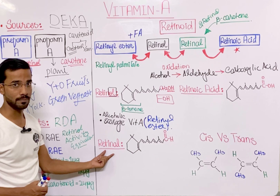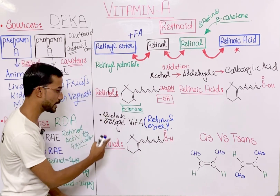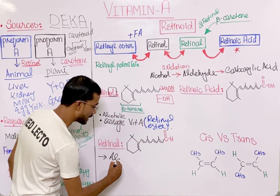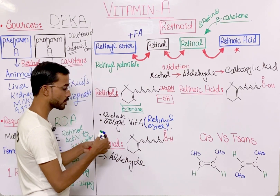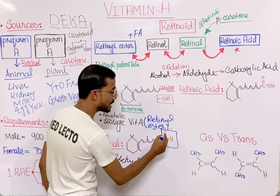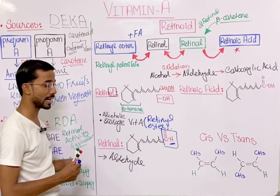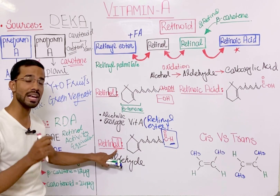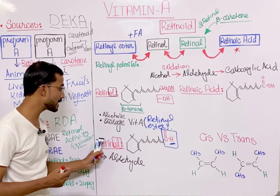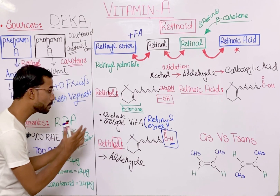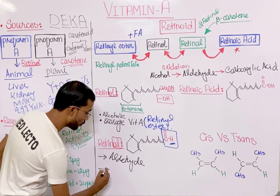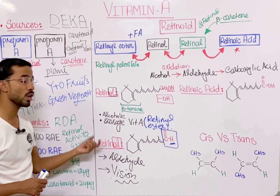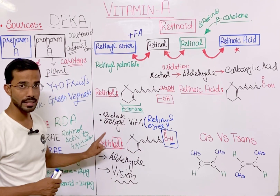When retinol undergoes oxidation, it produces retinal. Retinal is the aldehyde form of Vitamin A because it contains the aldehyde functional group (CHO). The word ending in '-al' indicates an aldehyde. The most important function of retinal is its role in vision.